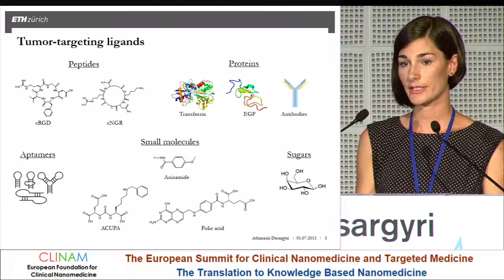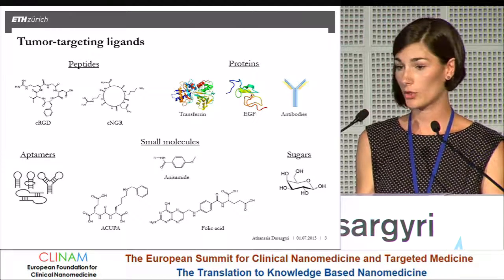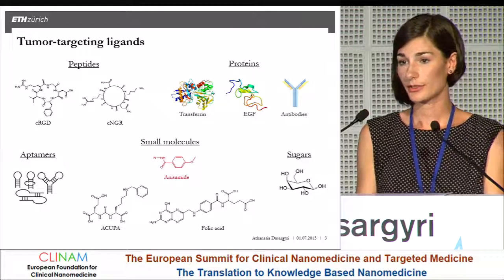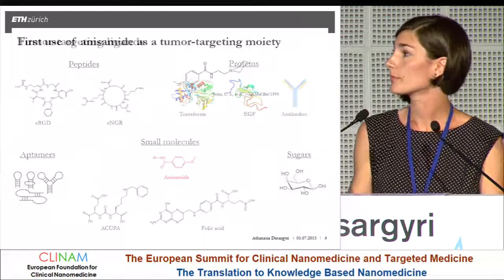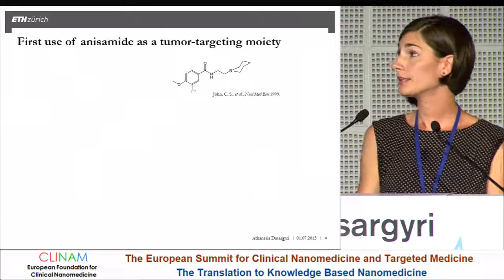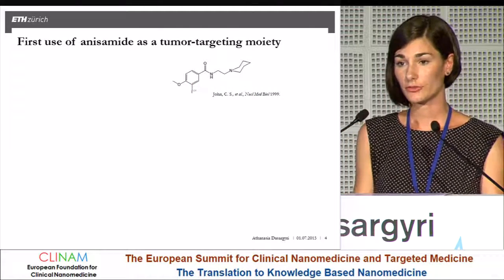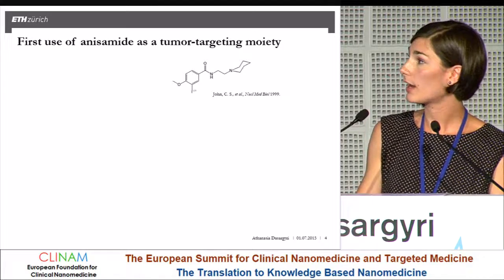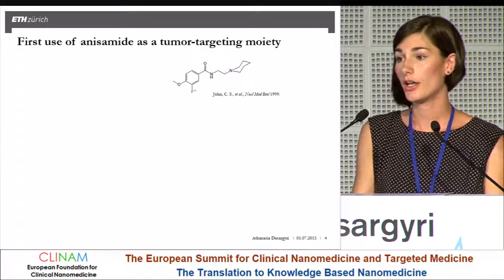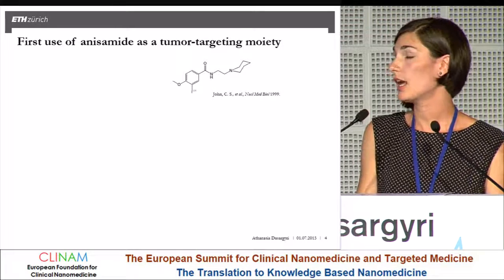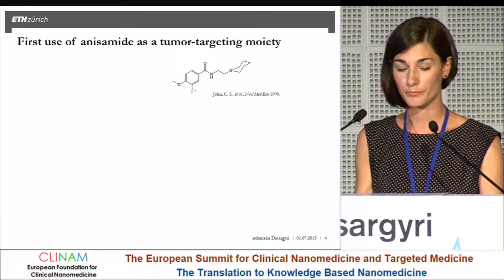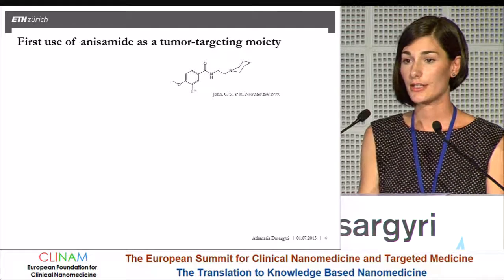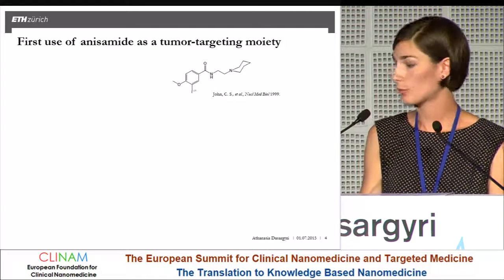One small molecule that appeared in the literature 11 years ago as a tumor targeting molecule is anisamide, and this will be the topic of the talk. The idea of using anisamide as a tumor targeting ligand came from a class of molecules called iodobenzamides, which had been shown previously to act as good tumor imaging agents in several rodent tumor models.